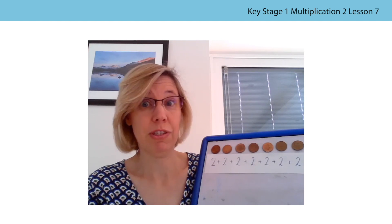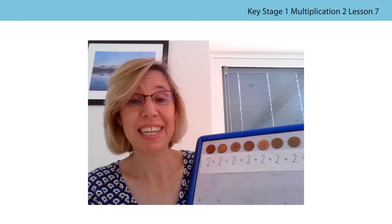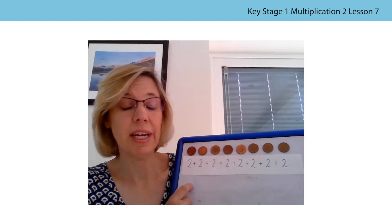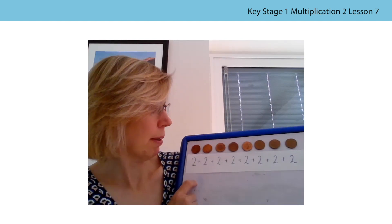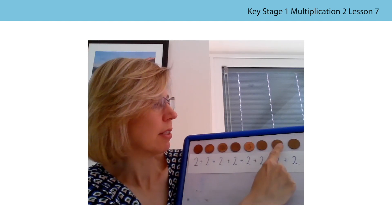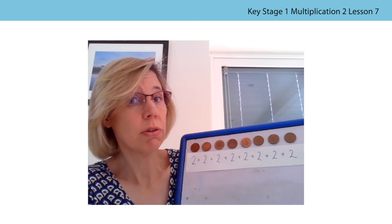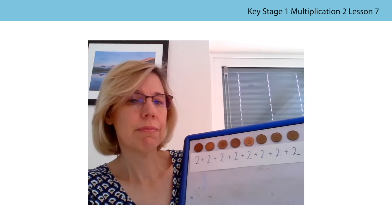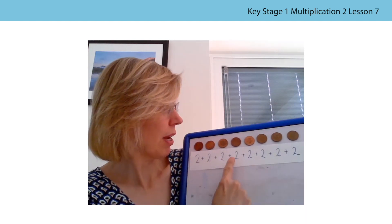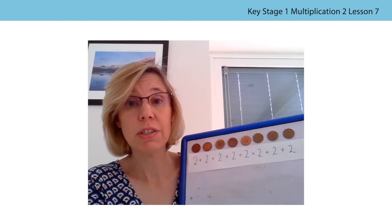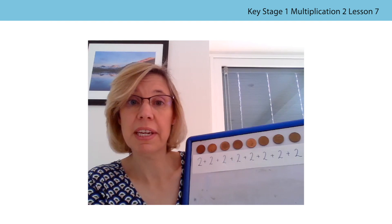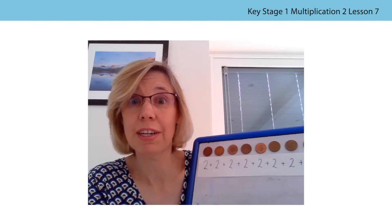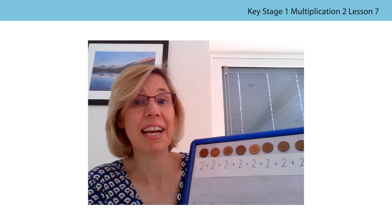Did he need so many plus twos? Yes, because each number matches a coin. Let's count: one, two, three, four, five, six, seven, eight — there are eight 2p coins. So how many number twos did he need? One, two, three, four, five, six, seven, eight — eight twos to match eight 2p coins. Well done to Number Bear! That was quite tricky and I think he's becoming more of an expert now.